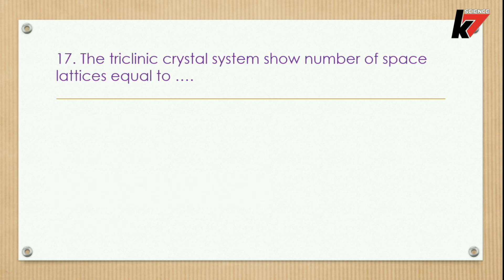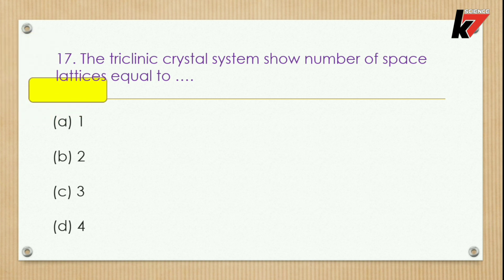Question 17: The triclinic crystal system shows a number of space lattices equal to — options: 1, 2, 3, or 4. Option number 1 is correct: the triclinic system has only 1 space lattice.